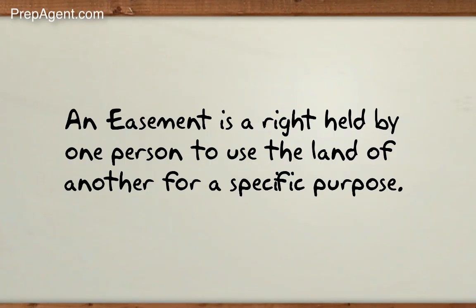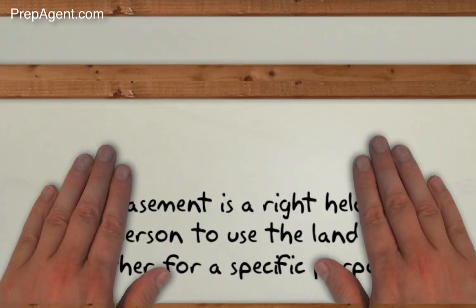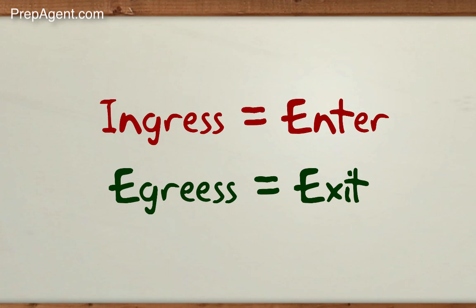An easement is a right held by one person to use the land of another for a specified purpose, such as access to a property. In talking about easements, you'll hear the terms ingress, which means to enter, and egress, which means to exit.